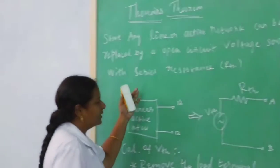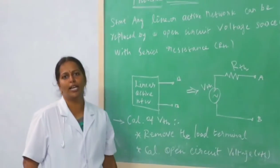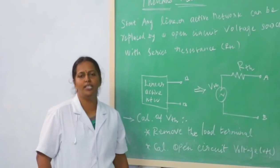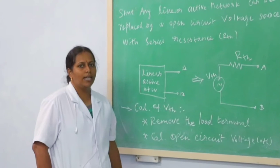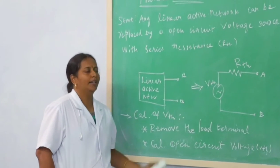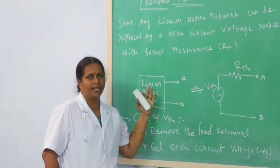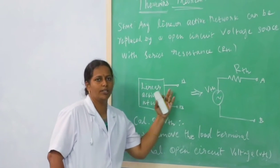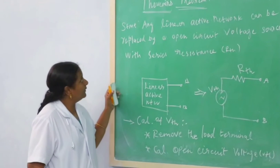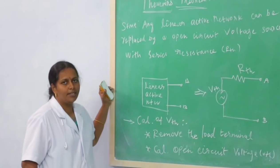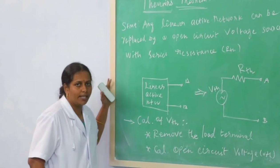If the network is very large, it is difficult to calculate voltage and current. Using mesh analysis, the calculation becomes difficult. So, to avoid that, we are using Thevenin's theorem and Norton's theorem.